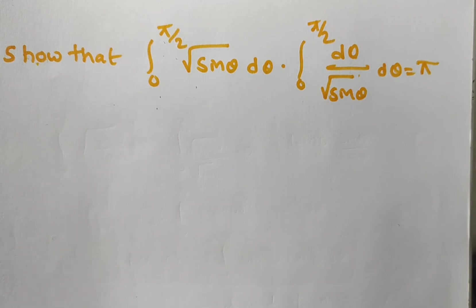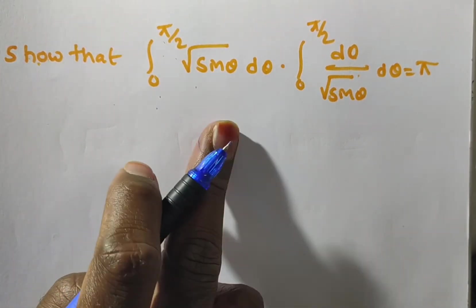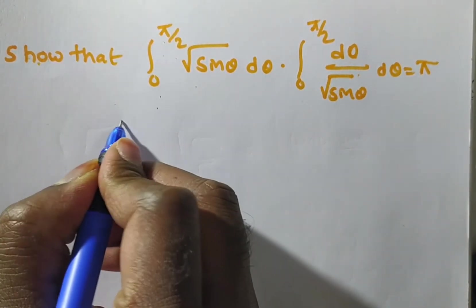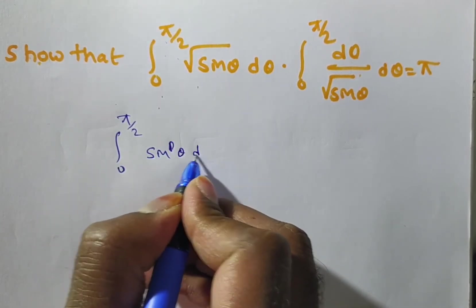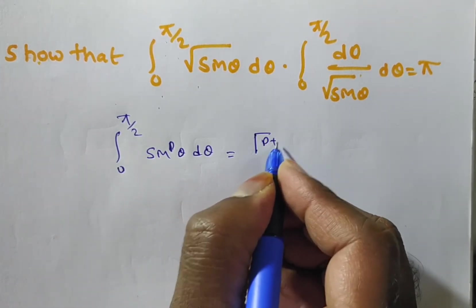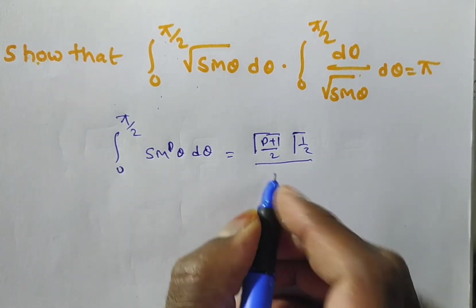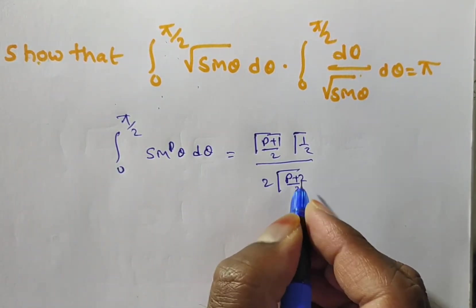Friends, to prove this, we will use the application of beta(m, n) based on the expression of trigonometric functions. We need to know the formula: integral from 0 to π/2 of sin^p(θ) dθ equals γ((p+1)/2) · γ(1/2) divided by 2 · γ((p+2)/2).